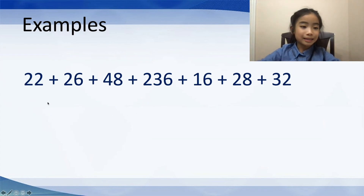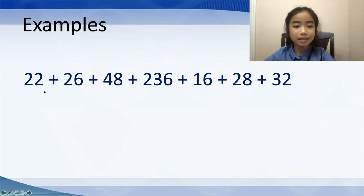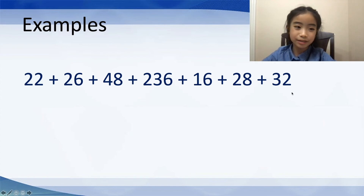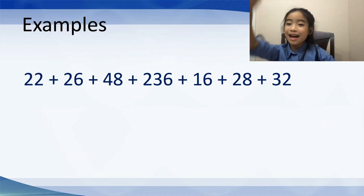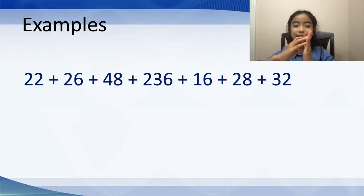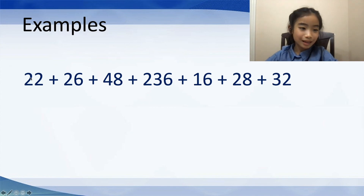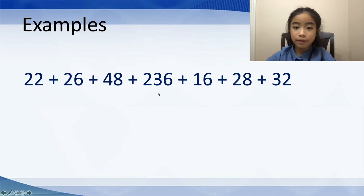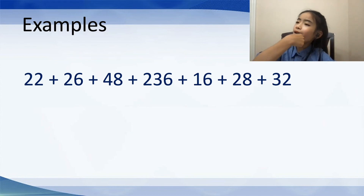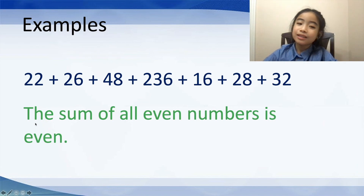Now let's look at the last one: 22 plus 26 plus 48 plus 236 plus 16 plus 28 plus 32. This time, they are all even numbers. Let's count how many even numbers we have: 1, 2, 3, 4, 5, 6, 7 — that's 7, which is an odd number. But since the sum of all even numbers is always even, the result is even.